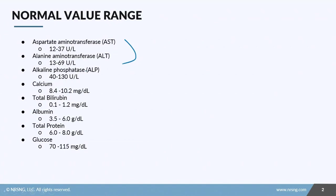We also include other tests in liver function tests: calcium (8.4–10.2), total bilirubin (0.1–1.2), albumin (3.5–6 g), total protein (6–8 g), and glucose (70–115 mg/dL). Now let's get to the nuts and bolts of liver function tests.